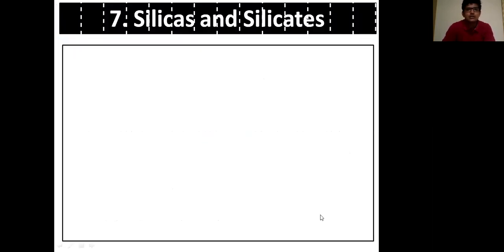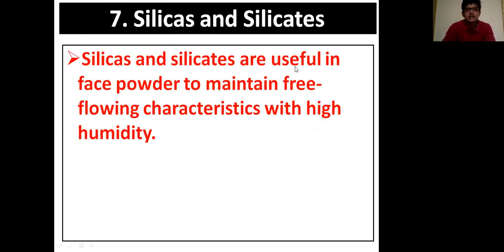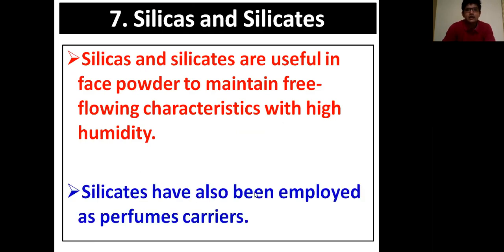The seventh constituent is silica and silicates. Silica and silicates are useful in face powder to maintain free-flowing characteristics under high humidity. Silicates have also been employed as perfume carriers, so that the particular odor of a face powder is retained for a longer time.